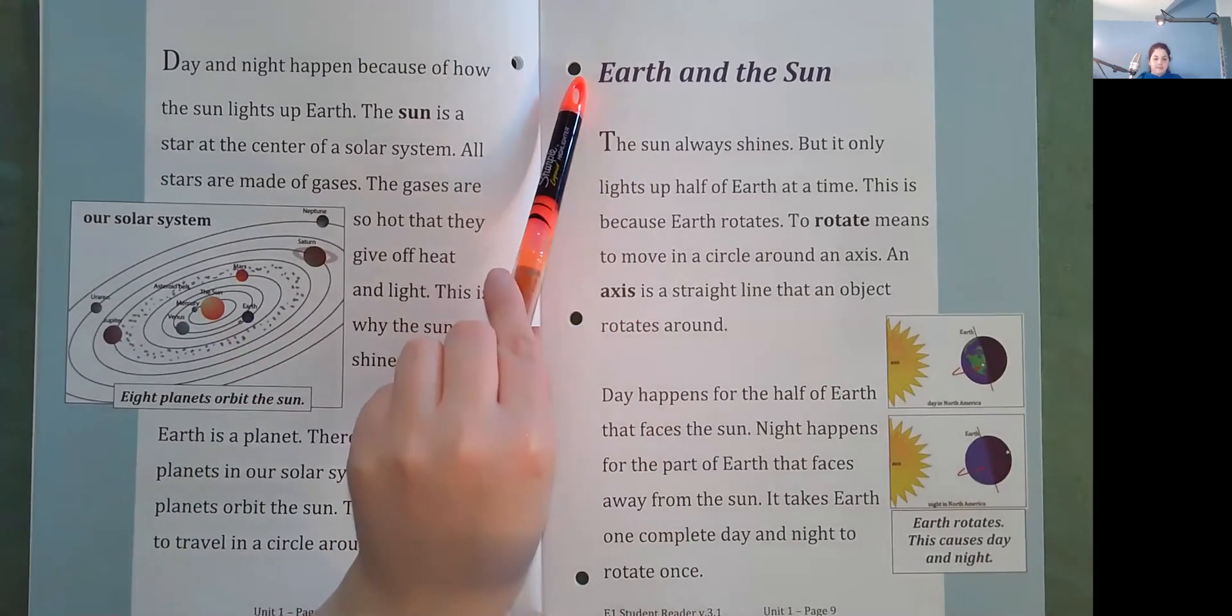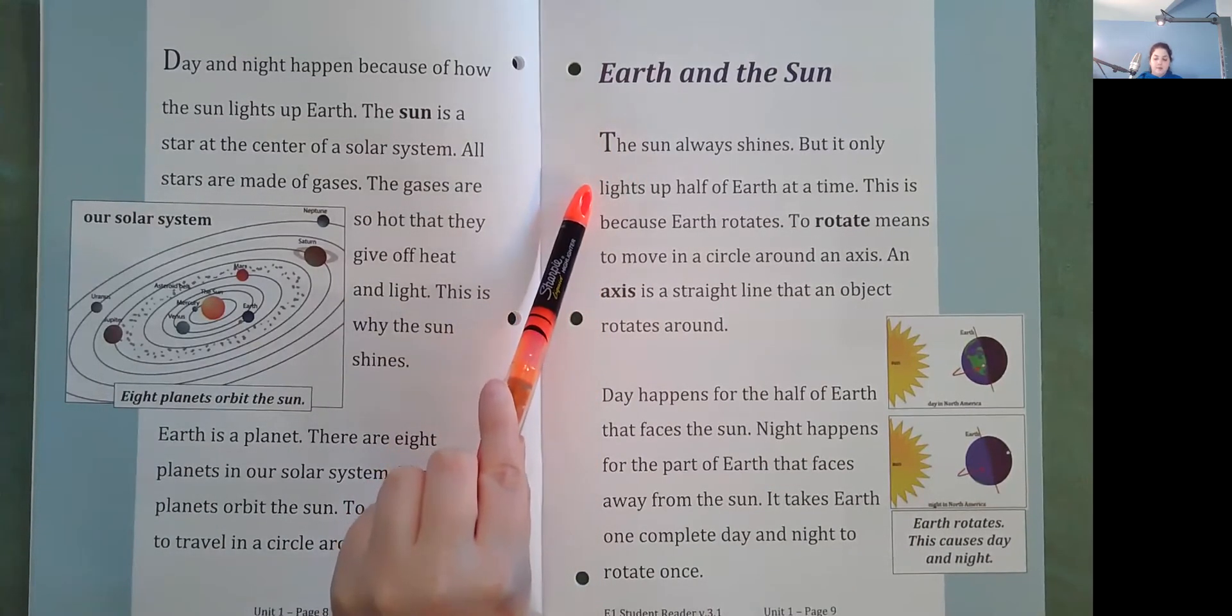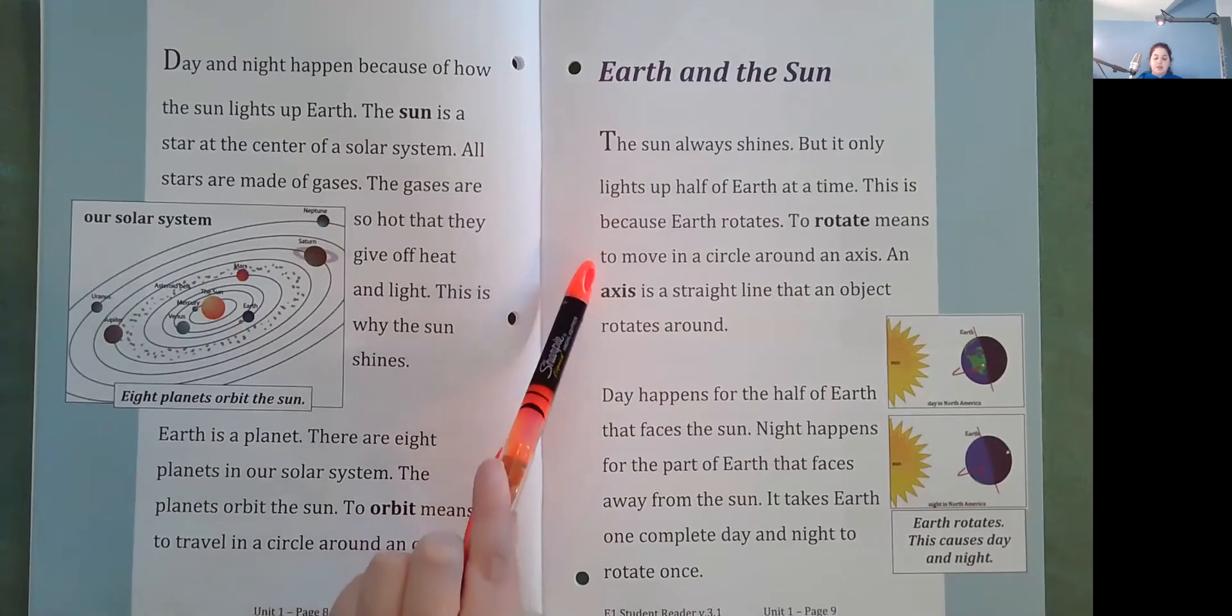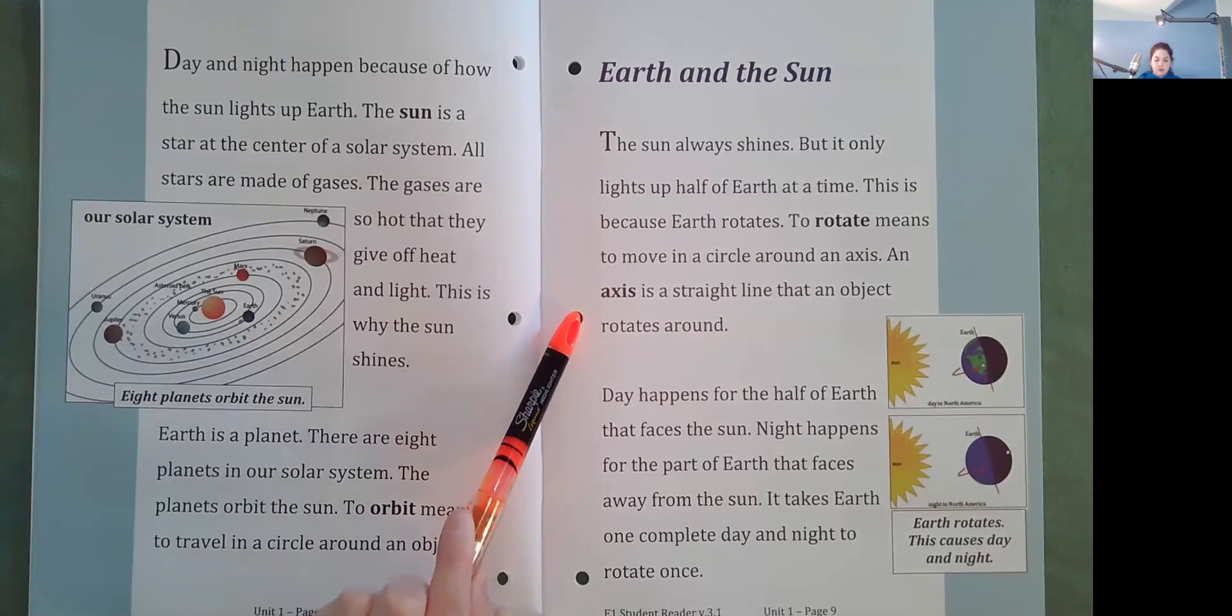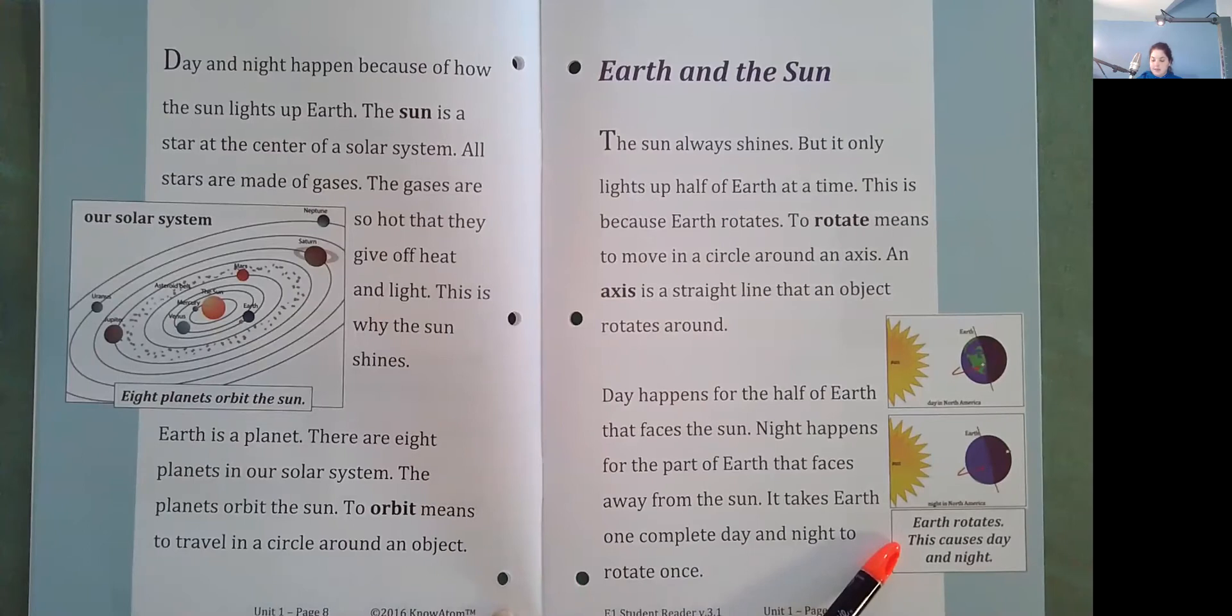Earth and the sun. The sun always shines, but it only lights up half of Earth at a time. This is because Earth rotates. To rotate means to move in a circle around an axis. An axis is a straight line that an object rotates around. Day happens for the half of Earth that faces the sun. Night happens for the part of Earth that faces away from the sun. It takes Earth one complete day and night to rotate once. Earth rotates. This causes day and night.